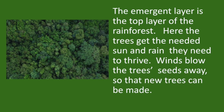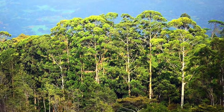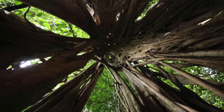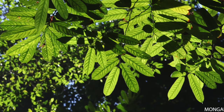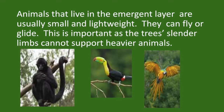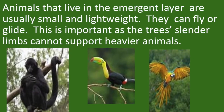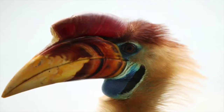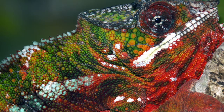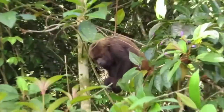The emergent layer is the top layer of the rainforest. Here the trees get the sun and rain they need to thrive. Winds blow the tree seeds away so new trees can grow. Animals that live in the emergent layer are usually small and lightweight — they can fly or glide, as the trees' slender limbs cannot support heavier animals.